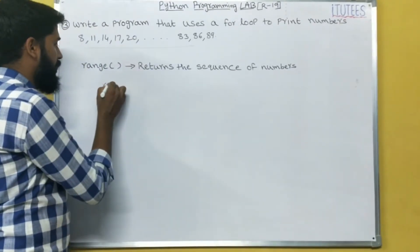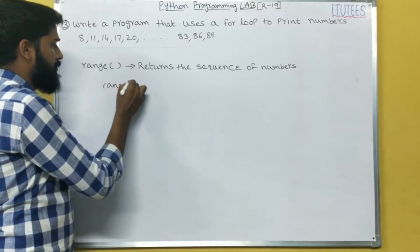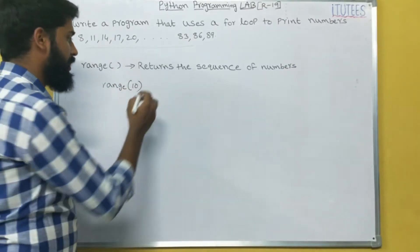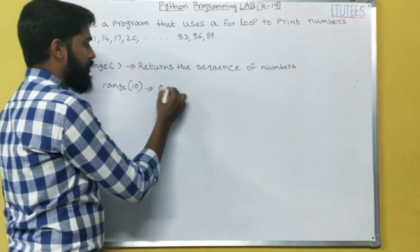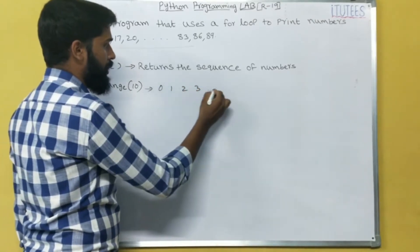For example, I write range of 10. So what it returns? It returns 0, 1, 2, 3 up to 9.